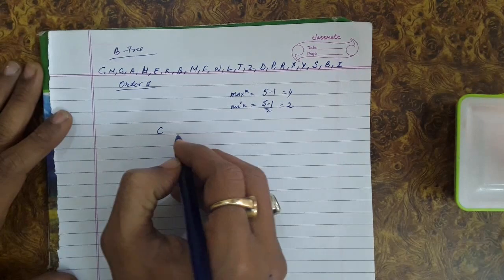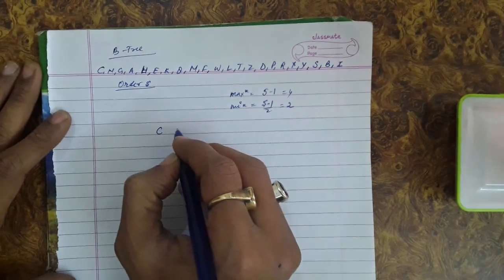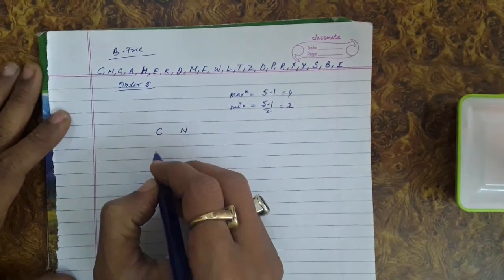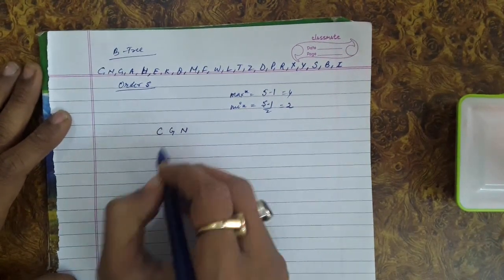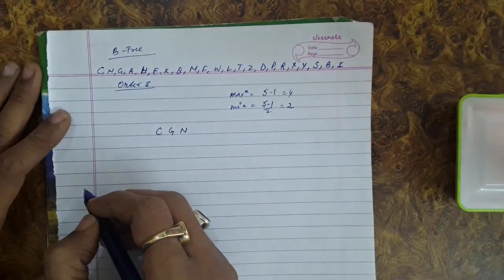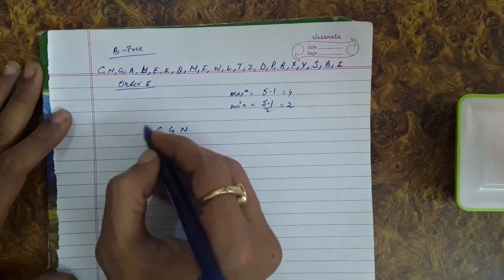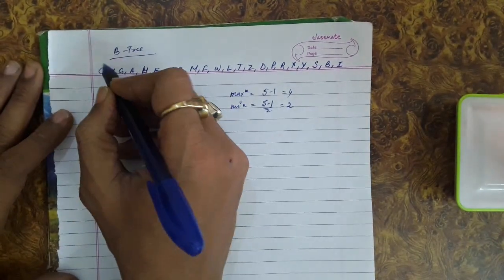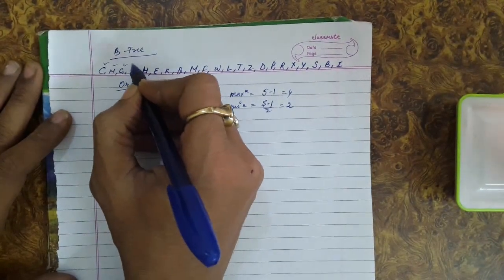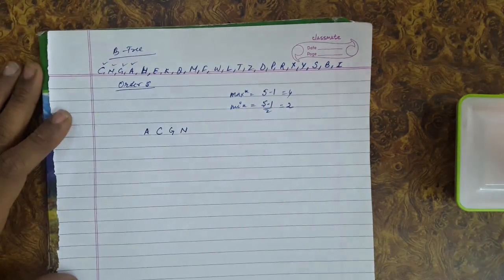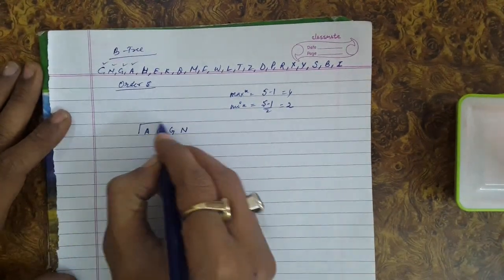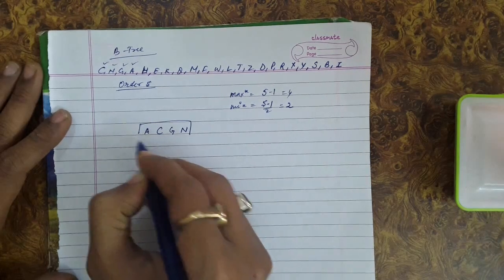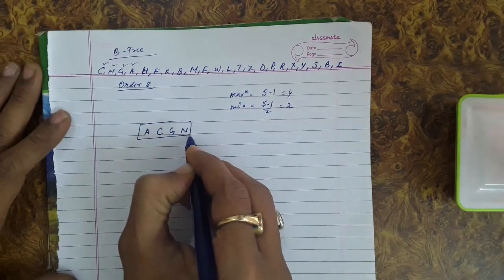C is the first key, then N, then G, and then A. Inserting these keys in sequence creates the first node, which is also the root node.